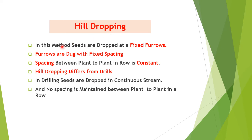In hill dropping, seeds are dropped at fixed furrows with fixed spacing; plant-to-plant spacing in a row is constant. Hill dropping differs from drilling in that drilling drops seeds in a continuous stream with no plant-to-plant spacing maintained, while in hill dropping a specific space between plants in a row is maintained.